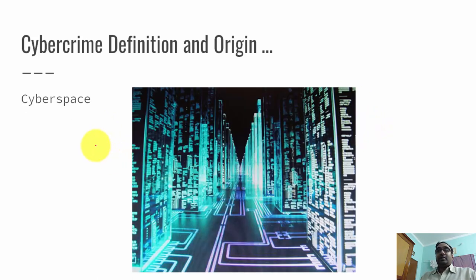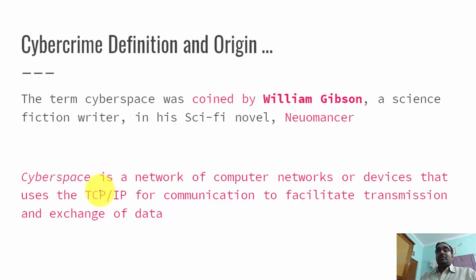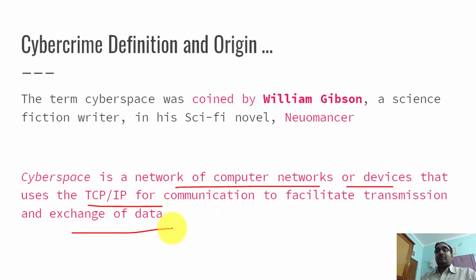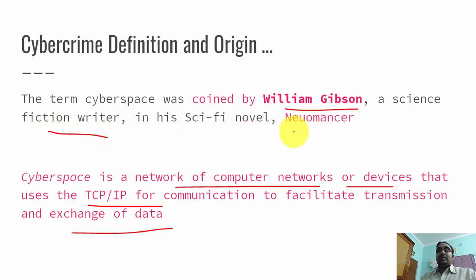The next piece of terminology is cyberspace — it is like a virtual world. Cyberspace is a network of computer networks or devices that uses some kind of protocol suite; in this case it is mentioned as TCP/IP, that facilitates communication and exchange of data. You can imagine cyberspace like the virtual world in the movie series Matrix, where people go through telephone lines into a virtual world. The term cyberspace was coined by William Gibson, a science fiction writer, who mentioned this term in his sci-fi novel Neuromancer.